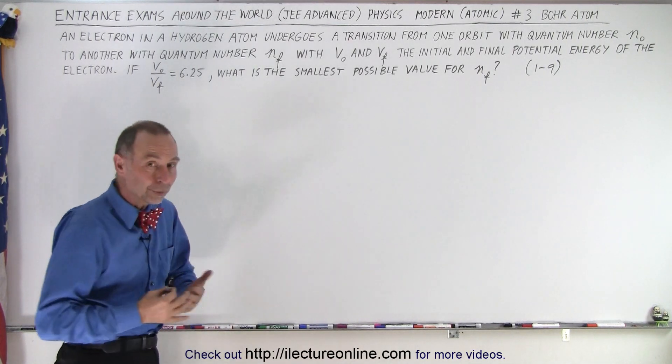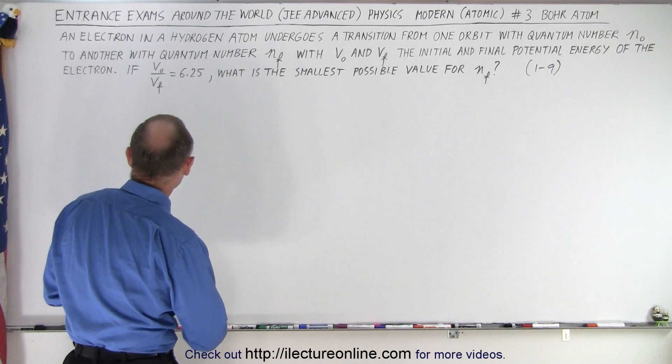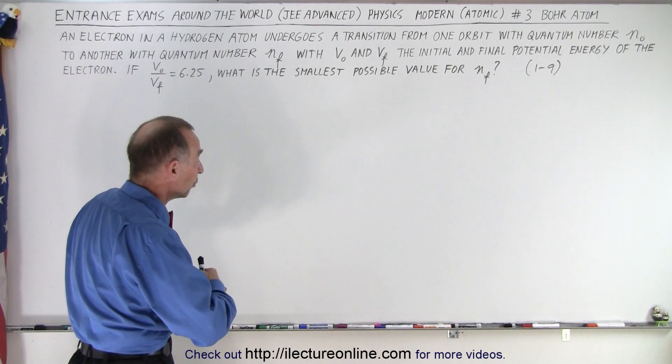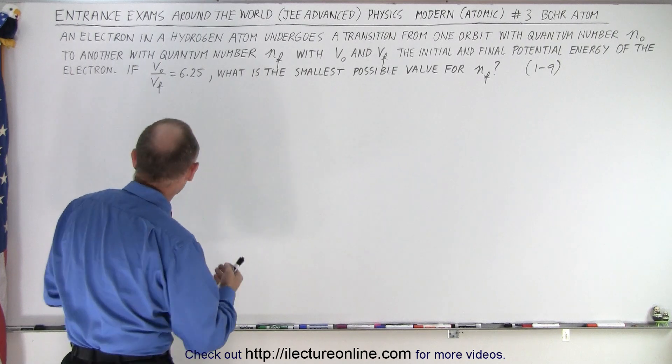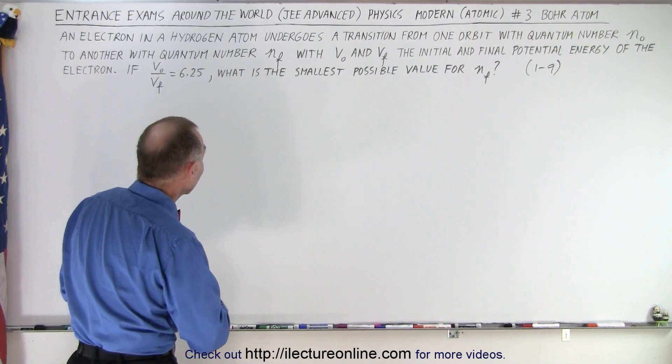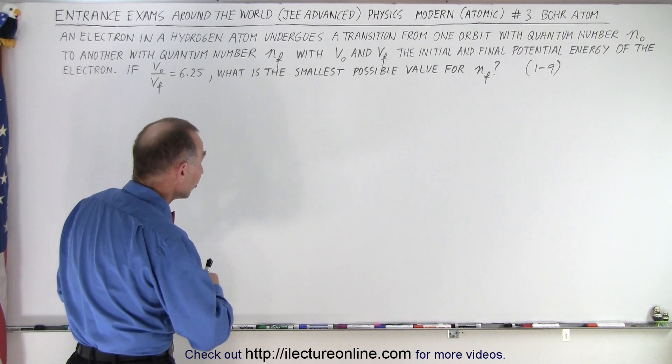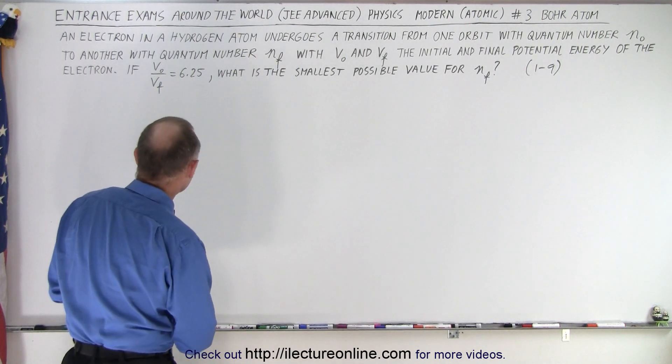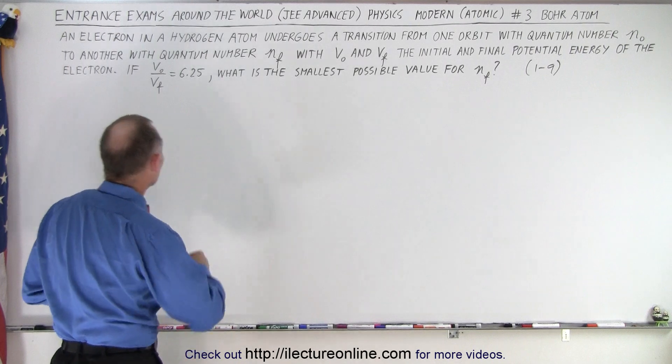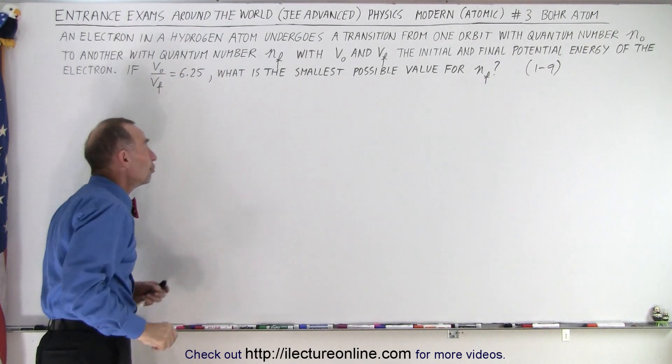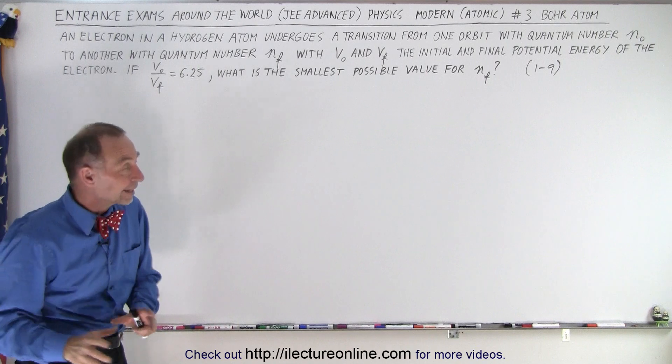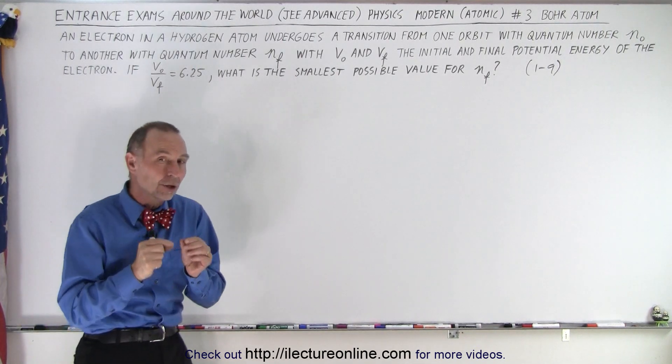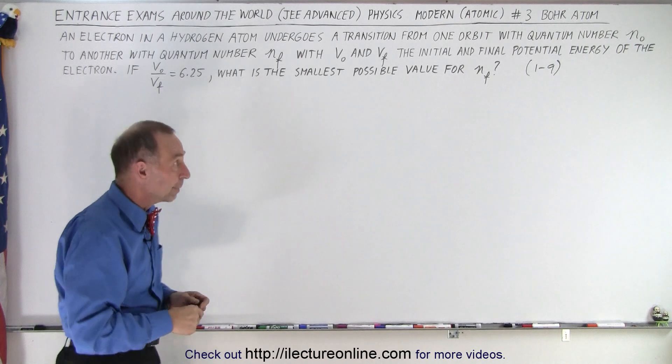It has to do with the Bohr atom, or the hydrogen atom. They're telling us that an electron in a hydrogen atom undergoes a transition from one orbit with quantum number n_initial to another with quantum number n_final. V_initial and V_final, the initial and final potential energy of the electron, gives you a ratio of V_initial to V_final being equal to 6.25. So if that's the case, what is the smallest possible value for the final orbit that the electron ends up in? It has to be a number from 1 to 9.